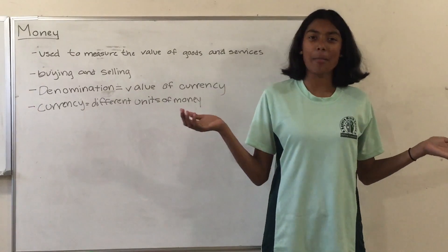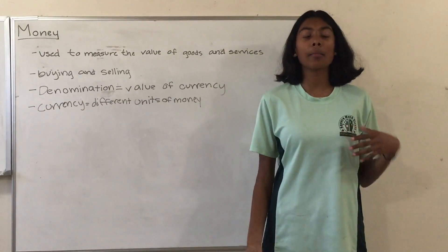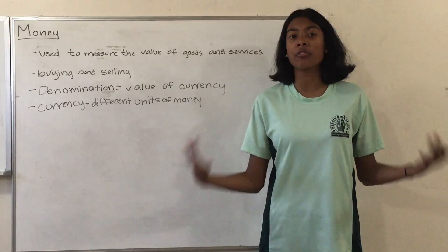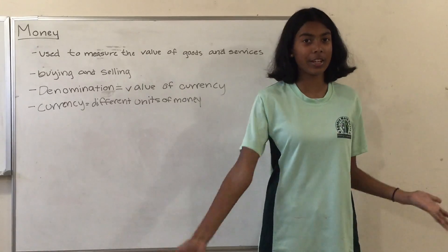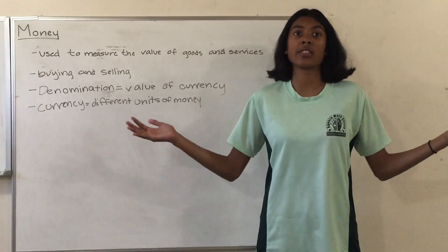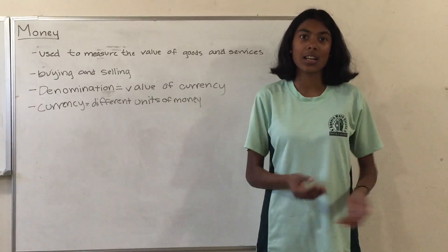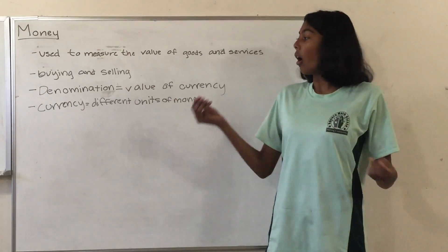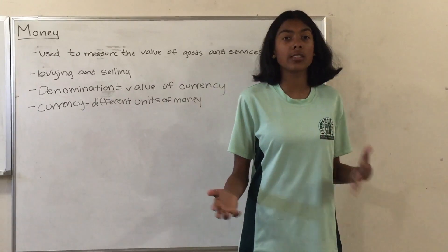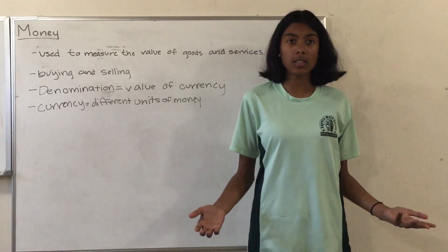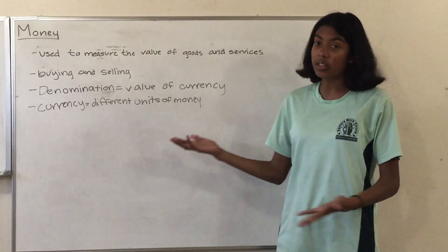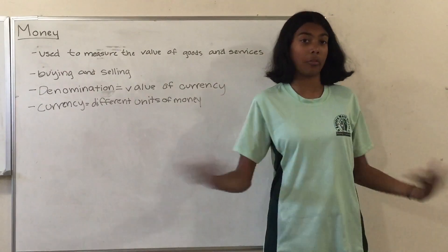Our first topic today is money. Money is used to measure the value of services and goods, and we can use money to buy and sell those services and goods. Some key words are denomination and currency. Denomination is the value of currency, while currency means the different units of money in different countries.